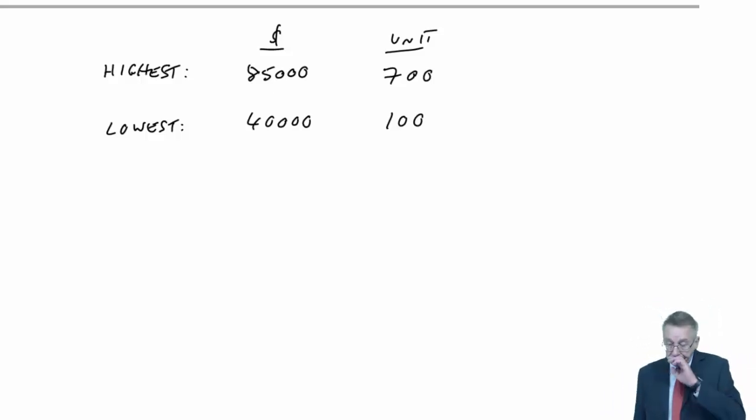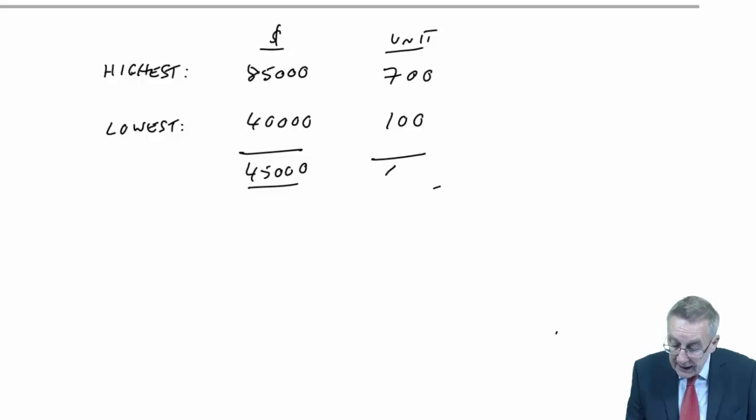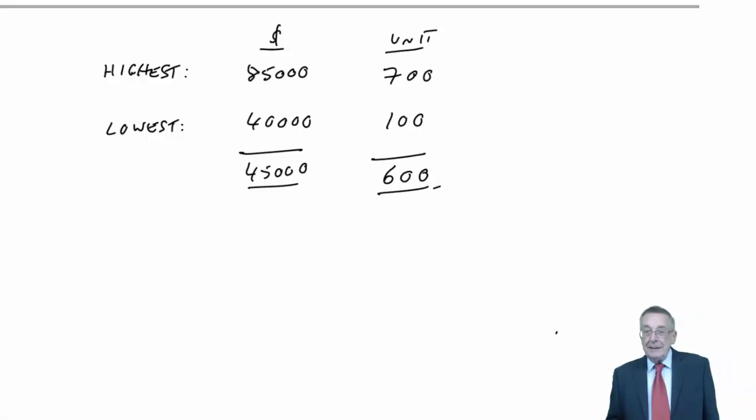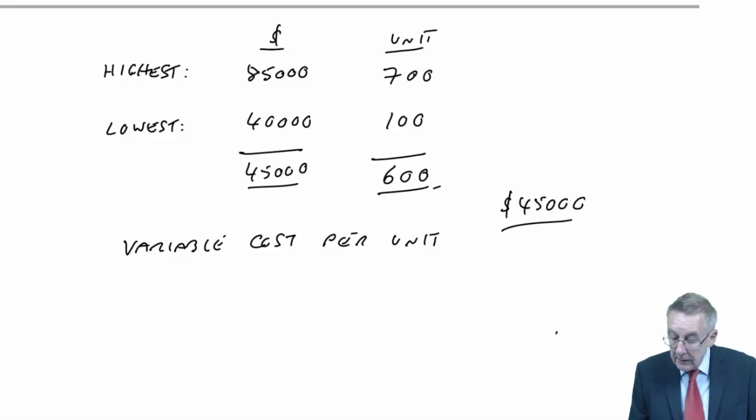And we then say, but why is the cost different? The cost of the highest is higher by 45,000. Why is it higher? Any fixed cost will have been the same in both months. It's higher because of the extra variable cost of producing an extra 600 units. So again, fixed cost will have been the same. The only reason why one is $45,000 more than the other, that must be the variable cost of the extra 600 units. And therefore, the variable cost per unit, 45,000 was the variable cost of 600 units, and so per unit, $75.